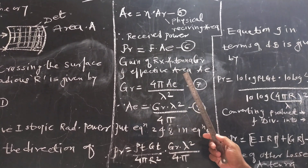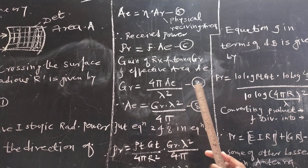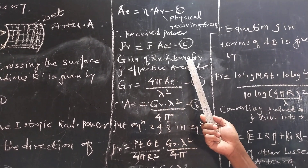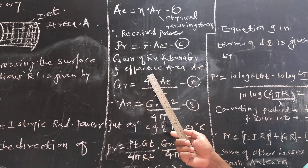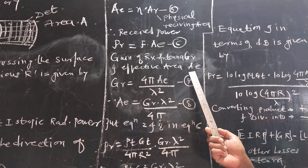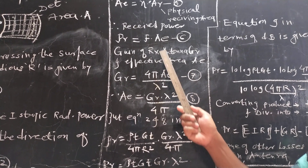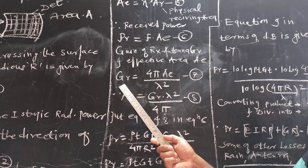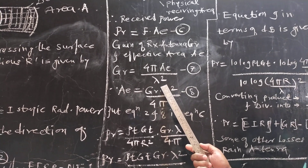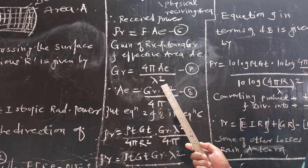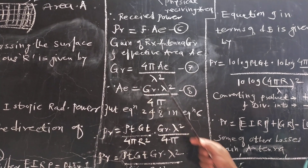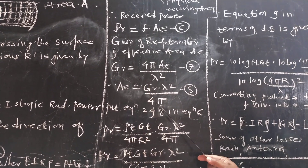We also need to mention two relations here. The first relation is the gain of the receiving antenna GR. If the effective area is AE, then the relation between them is given by: GR = 4π·AE / λ². From this, we can calculate AE = GR·λ² / (4π).